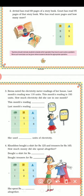Now next is question number 3. Reena noted the electricity meter readings of a house. Last month's reading was 118 units. Reena نے electricity meter readings note کیں. Last month's reading کتنی تھی? 180 units. And this month's reading? 193 units. So how much electricity did she use in one month?